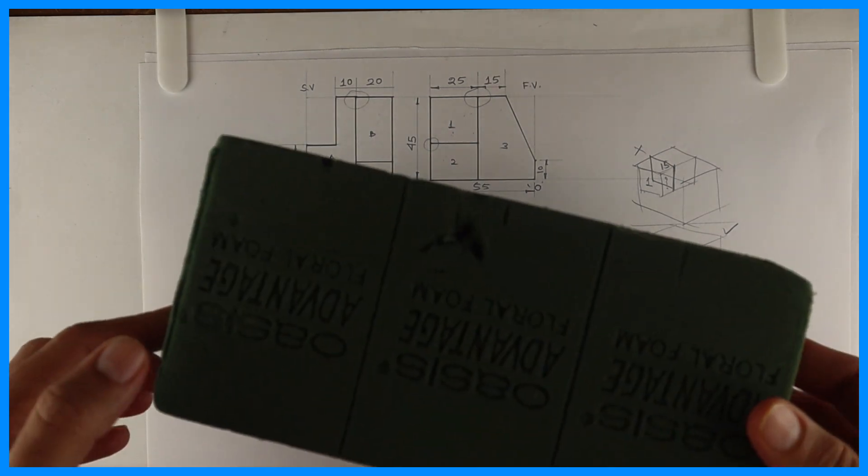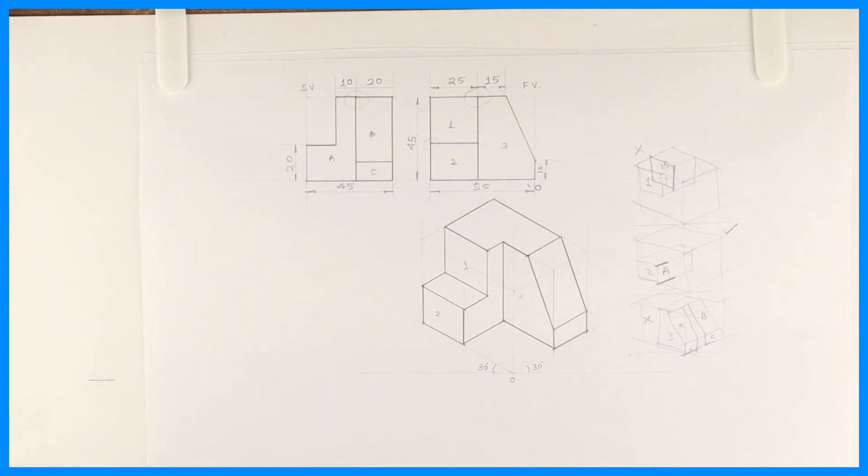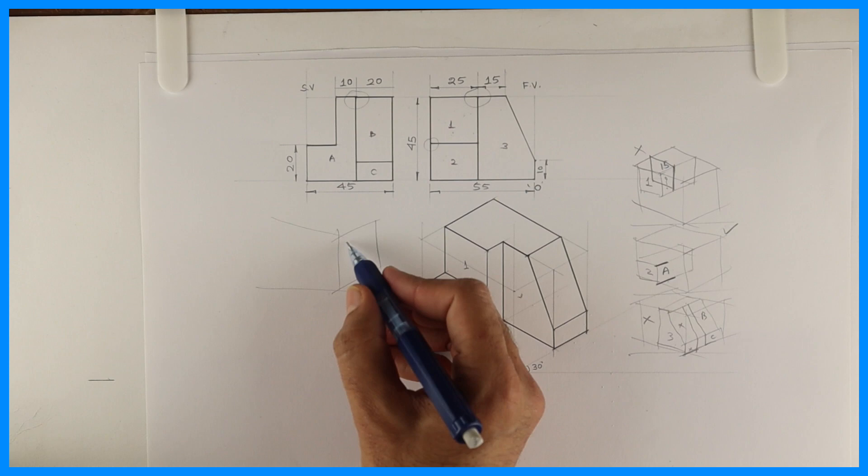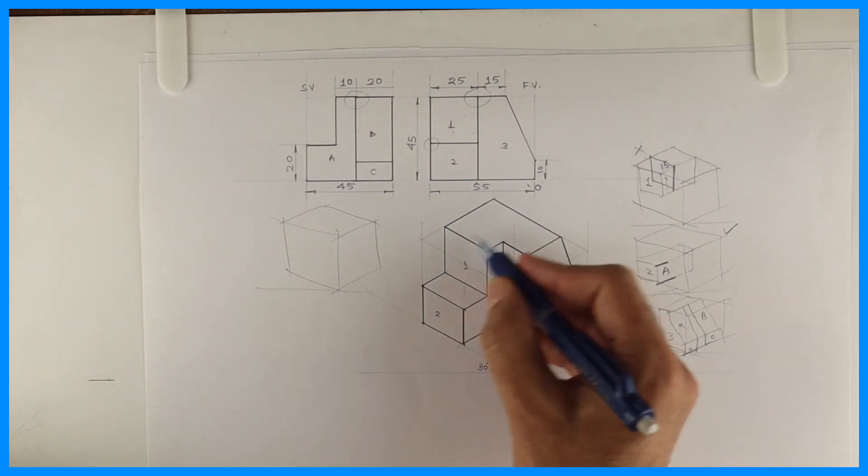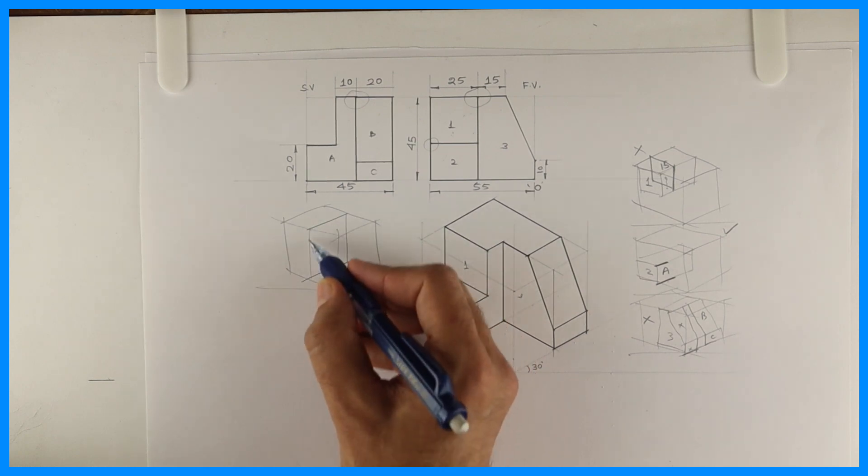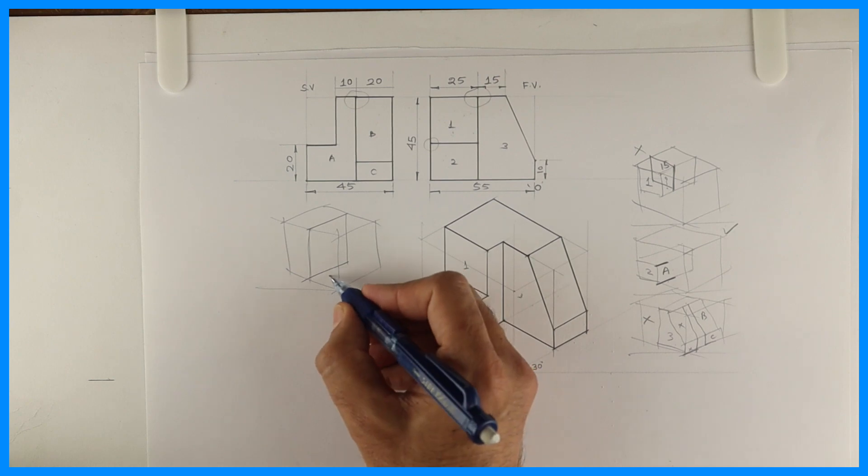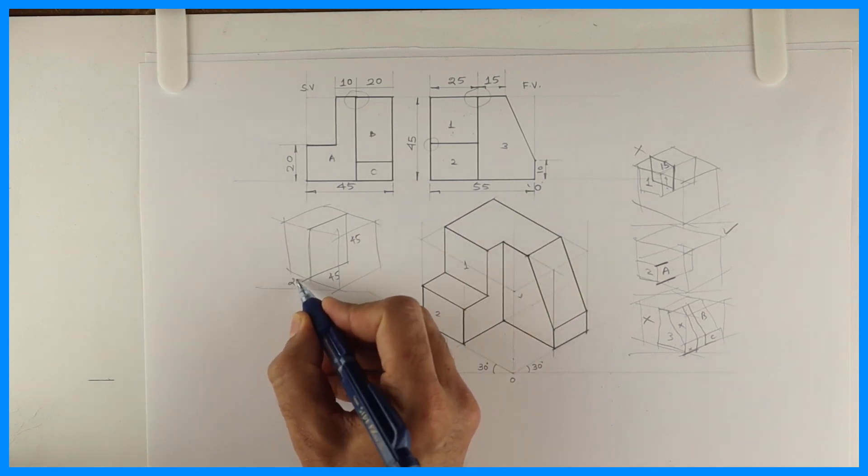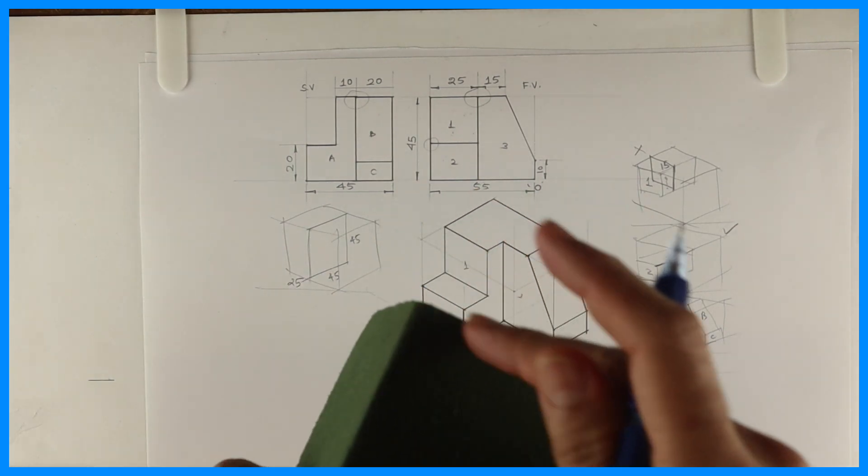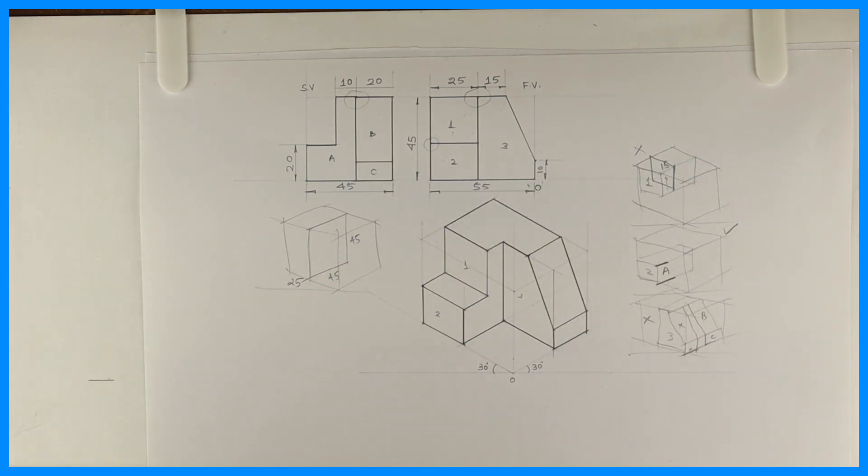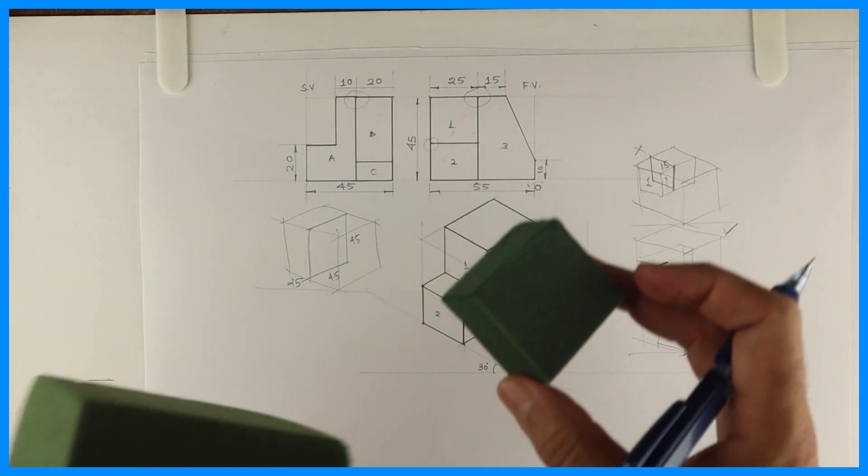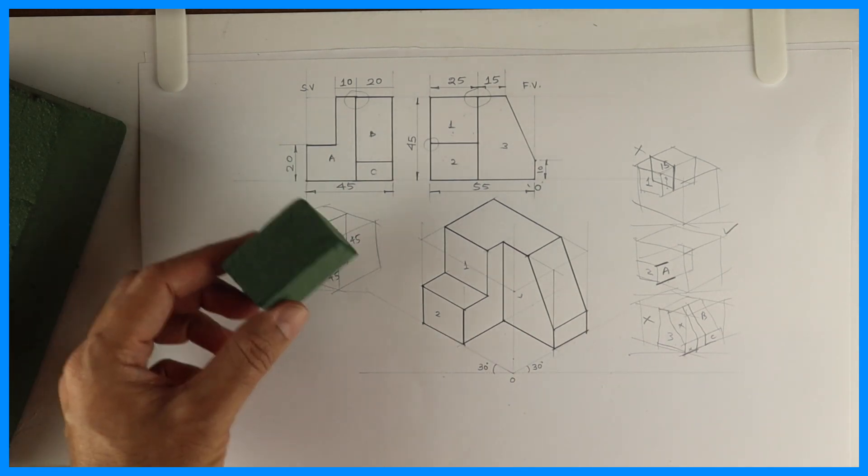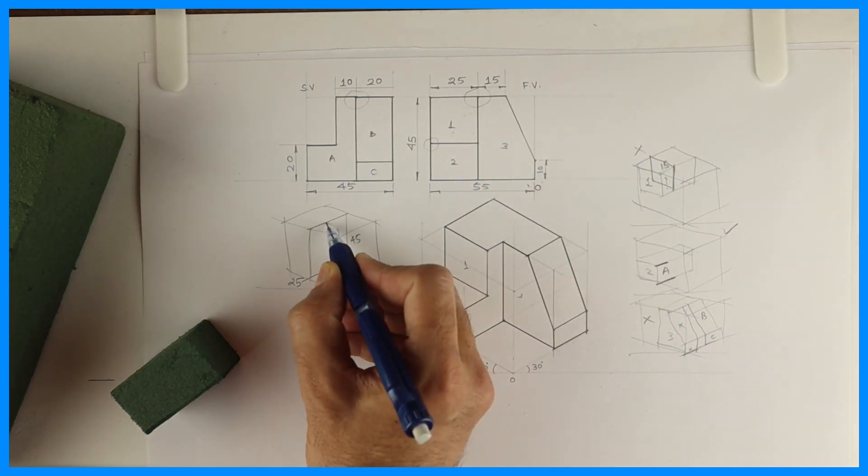Now we'll take a floral form box like this. But in such a fashion, first we'll draw isometric, but we'll take part by part. See this. So how much is this? 45. Height is 45, and this is 25. So I will take 45, 45, 45 and height I'll take 25, and I'll cut one piece like this. So one piece 45, 45, 25. Second piece.